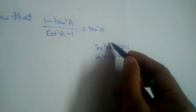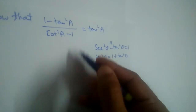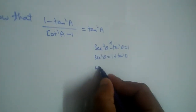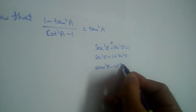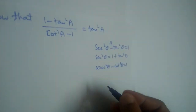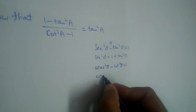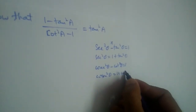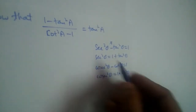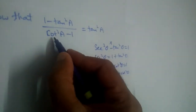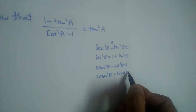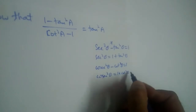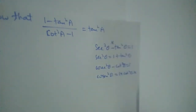Similarly, we have the identity cosecant squared minus cot squared equals 1. If we send cot to the other side, cosecant squared theta equals 1 plus cot squared theta. But here we have cot squared a minus 1, not 1 plus cot squared a. So we cannot apply these identities here either.